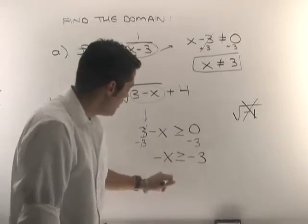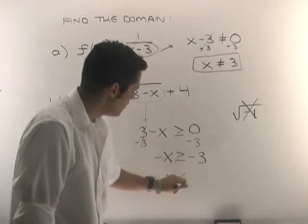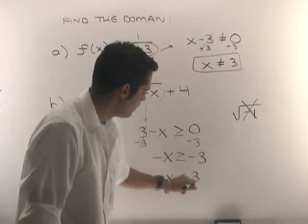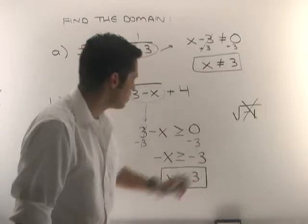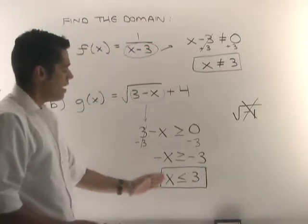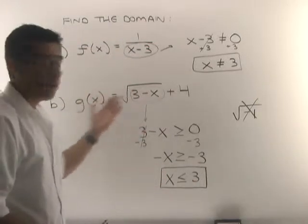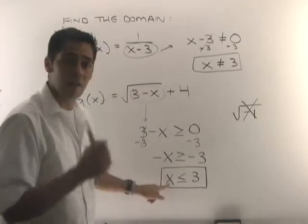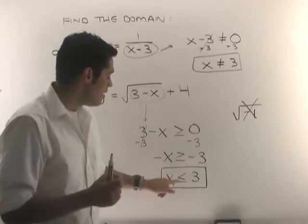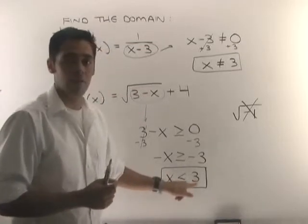But it will flip our inequality over. And that's our solution. So what we're saying is that in order for this function to be okay, you must plug in a value of x that is less than or equal to the value of 3.